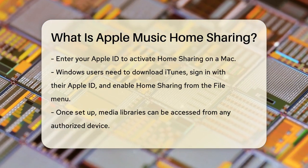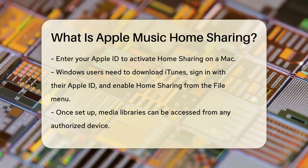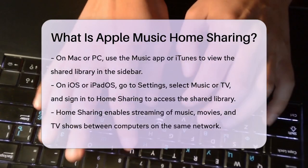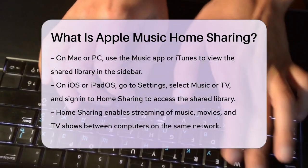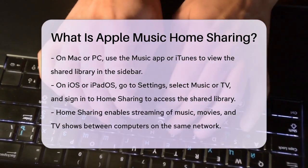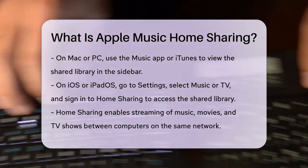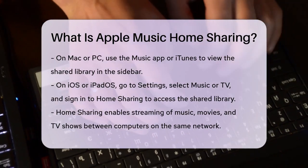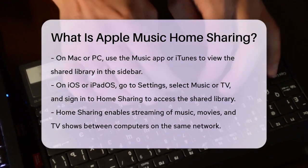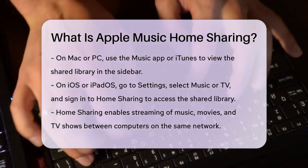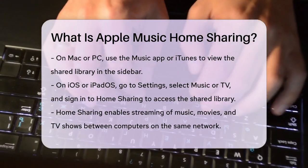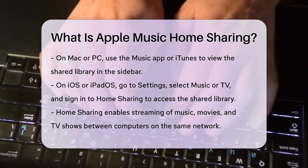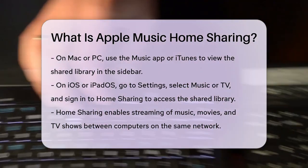Once Home Sharing is set up, you can access your media library from any authorized device. On your Mac or PC, open the Music app or iTunes, sign in with your Apple ID, and you'll see the shared library in the sidebar. On iOS or iPadOS devices, go to Settings, select Music or TV, and sign in to Home Sharing with your Apple ID. This will add a new Home Sharing tab in the Music or Apple TV app, where you can select and play media from your shared library.